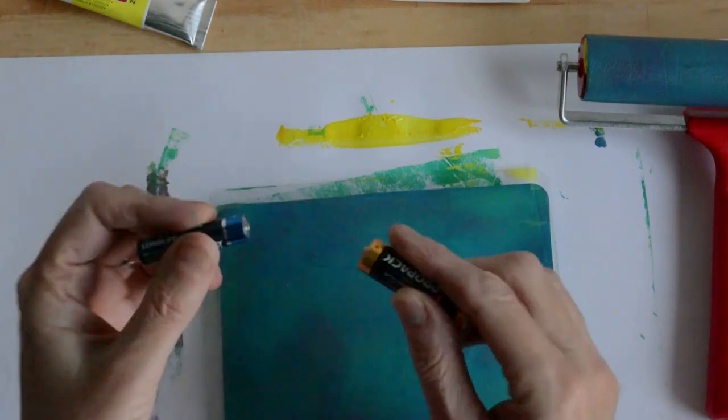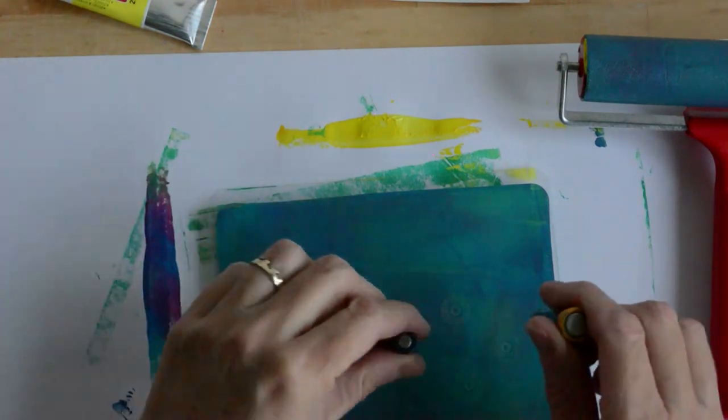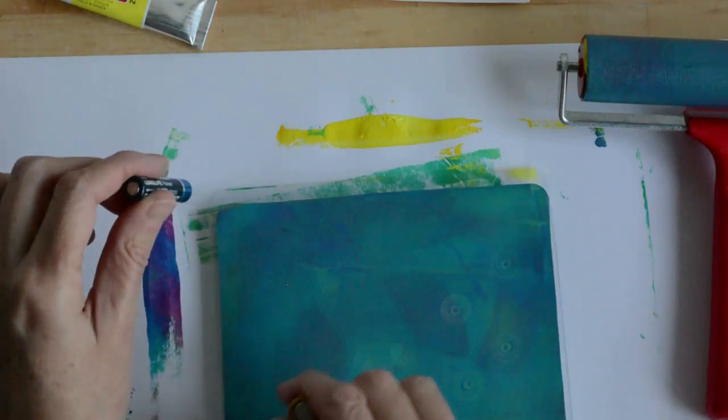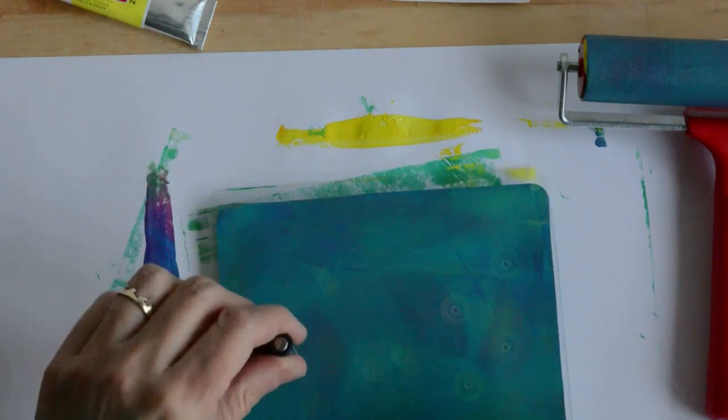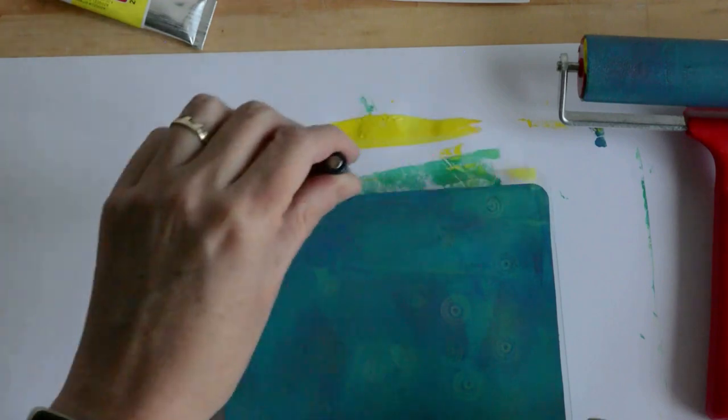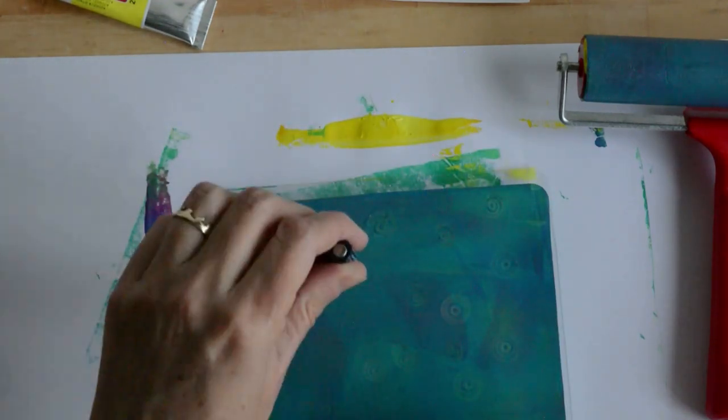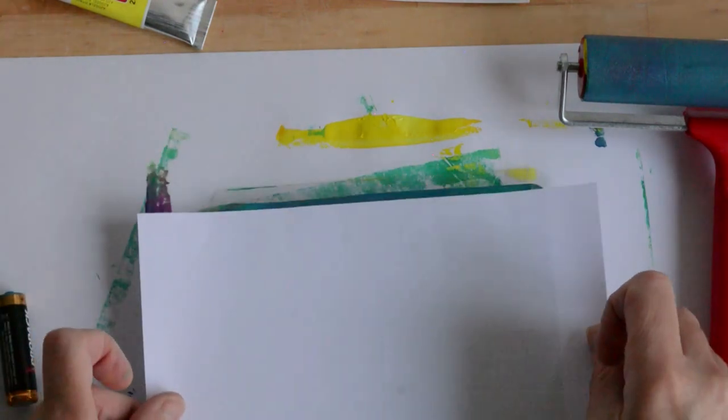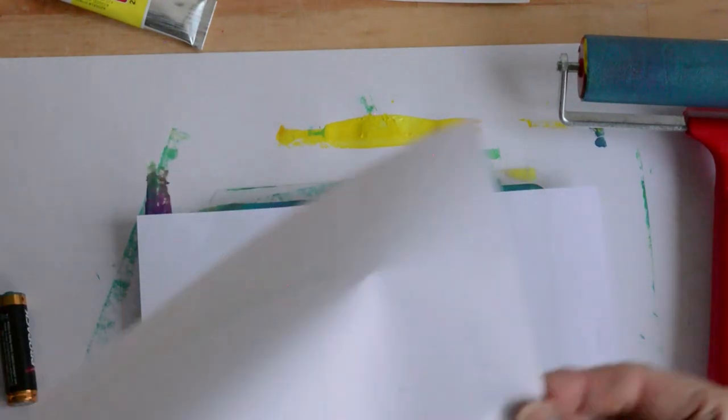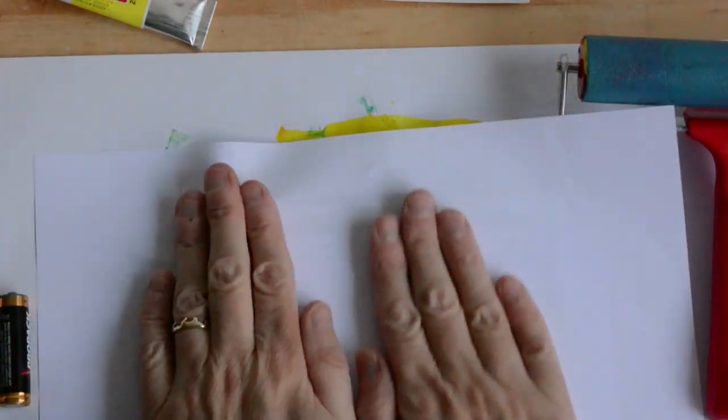Here I'm using the end of batteries because they're also circular, and just having a play. Bear in mind your acrylic ink will dry relatively quickly, so you don't want to spend too long adding different texture shapes to your plate because you don't want your acrylic to dry on your jelly plate.